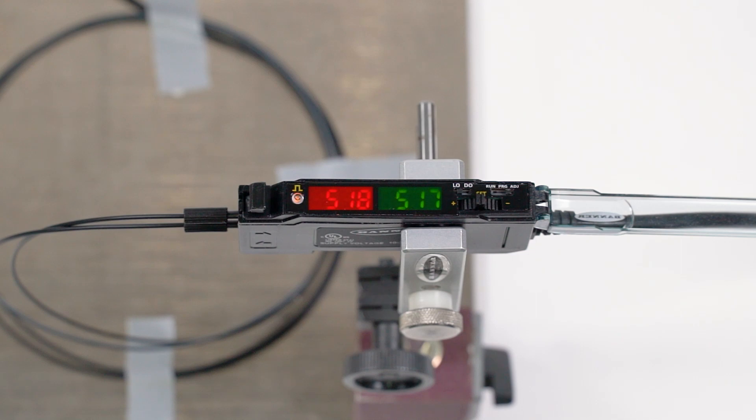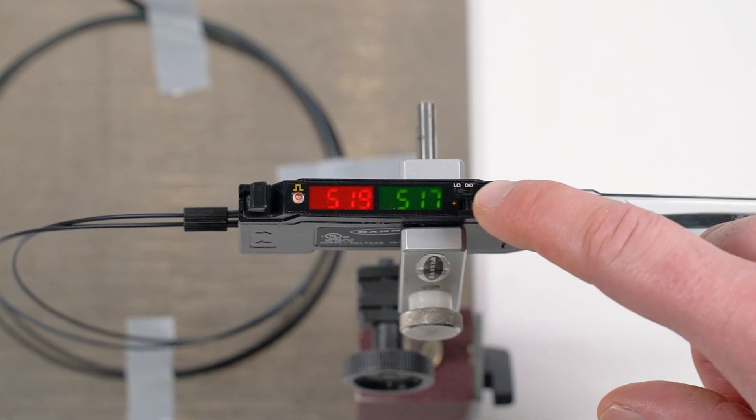The display will now show the new window midpoint in green. If you need to manually adjust this midpoint, use the rocker button to increase or decrease the value.